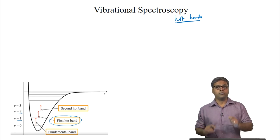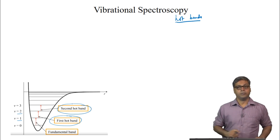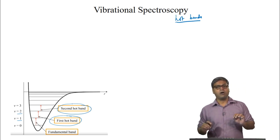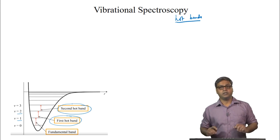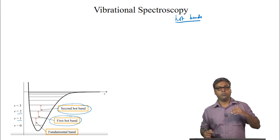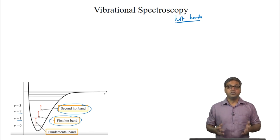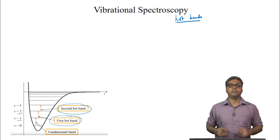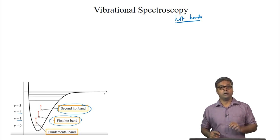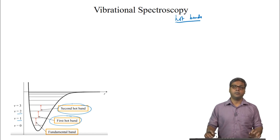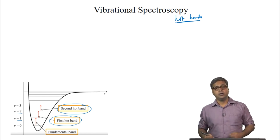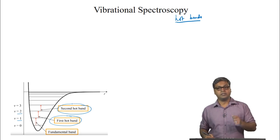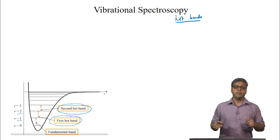We can also have a transition from V=2 to V=3, which is the second hot band. The intensities of these hot bands are much smaller than the fundamental band. The reason is that the populations of V=1 and V=2 — the initial states of the first and second hot bands — are much smaller than the population of V=0, the initial state of the fundamental band.